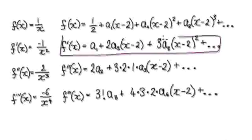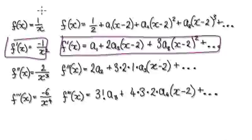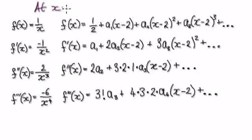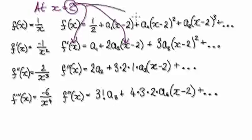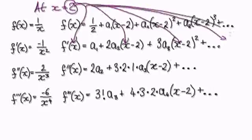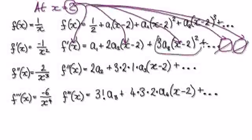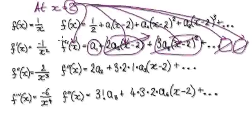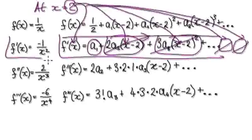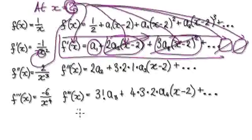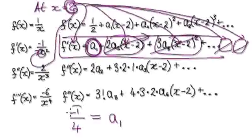For the second part, we demand the first derivative of the red line to match the first derivative of the blue line at x equals 2. Substituting 2 into the differentiated series, everything cancels out leaving a1. Putting 2 into the derivative of 1/x gives minus 1/4. So a1 equals minus 1/4.